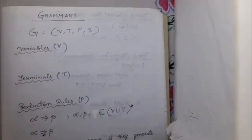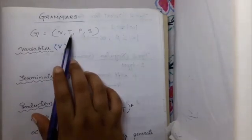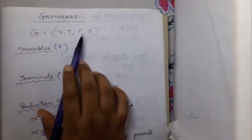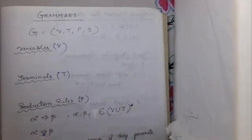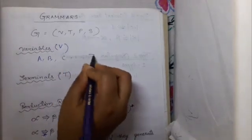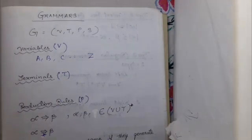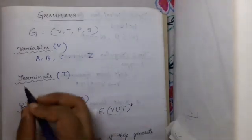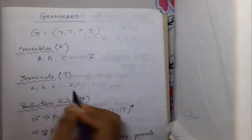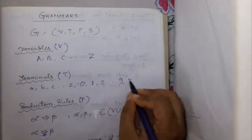A grammar consists of four tuples: V the set of variables, T the set of terminals, P the production rules, and S which denotes the starting symbol. The set of variables is also known as non-terminals and is usually represented by uppercase alphabets like A, B, C. T is the set of terminals, represented by lowercase alphabets like a through z, or digits 0 through 9, or symbols like star, dollar, etc.